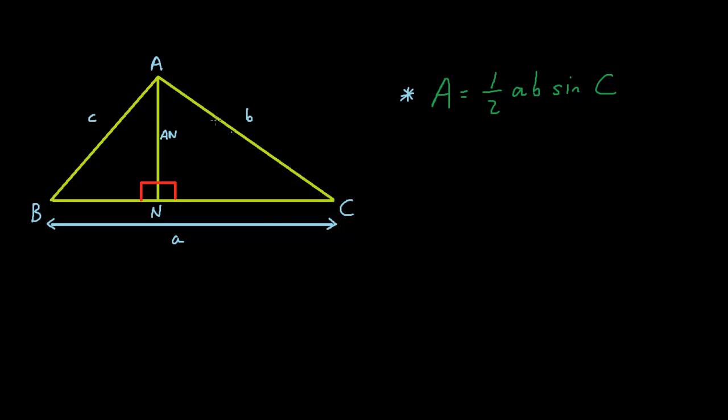Inside this large triangle, there are two right-angled triangles. This angle here is 90 degrees, and the angle to the right of it is 90 degrees.